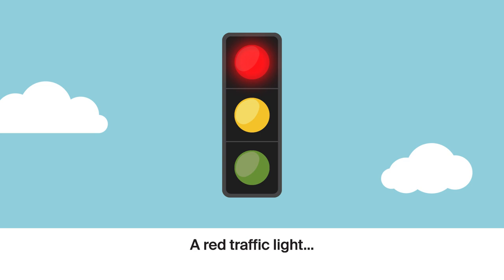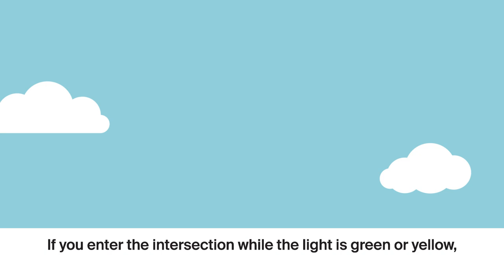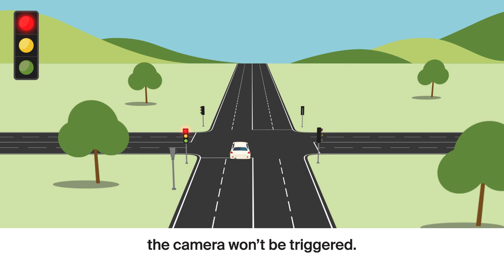A red traffic light means you must stop before the stop line. A red light camera will only activate after the traffic light turns red. If you enter the intersection while the light is green or yellow, the camera won't be triggered.